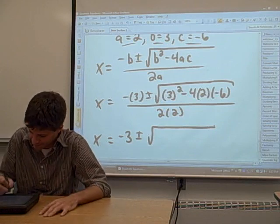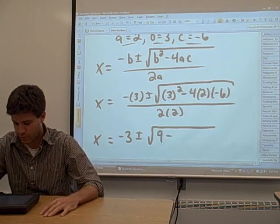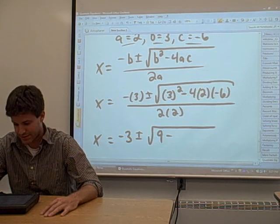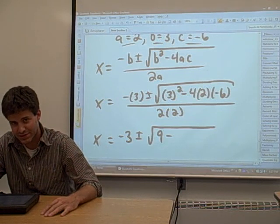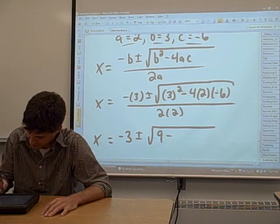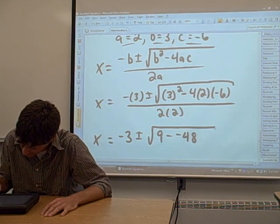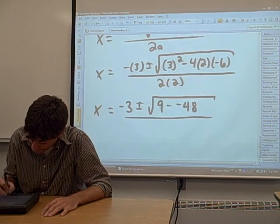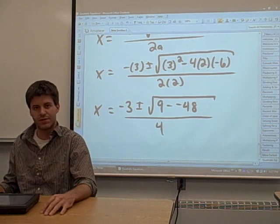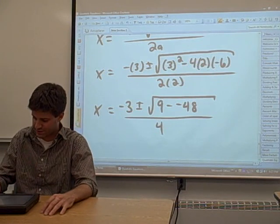3 squared is 9, minus 4 times 2 is 8. 8 times negative 6 is negative 48. So we have 9 minus negative 48. 2 times 2 is 4. That's the first step of the simplification. The next step is going to give us our answer.